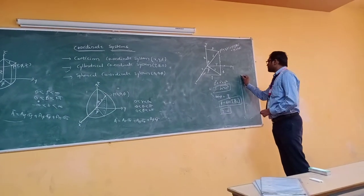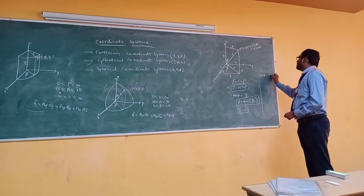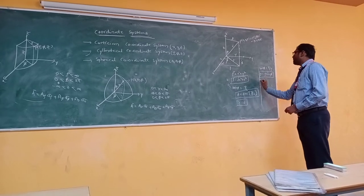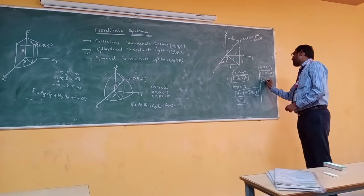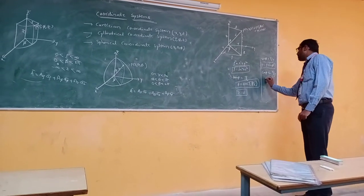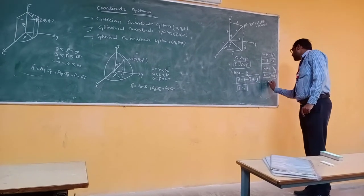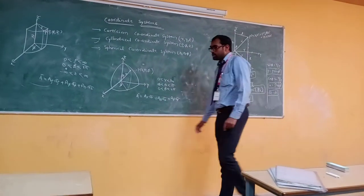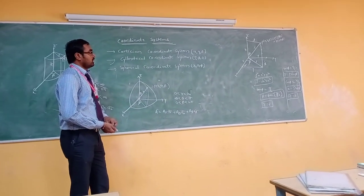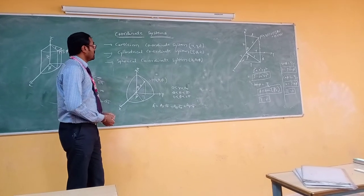From the diagram, sin(phi) equals y over rho, so y equals rho times sin(phi). Similarly, cos(phi) equals x over rho, so x equals rho times cos(phi). This completes the conversion between Cartesian and cylindrical coordinate systems. Next, we can convert spherical coordinates into cylindrical coordinates or cylindrical into spherical.